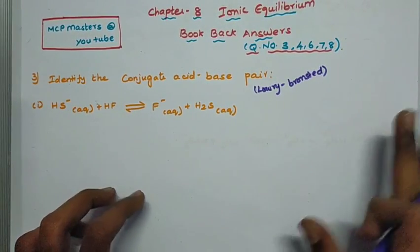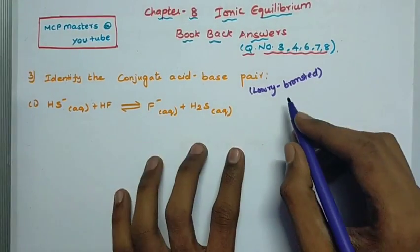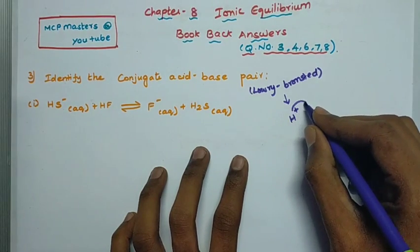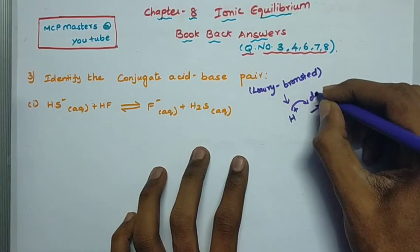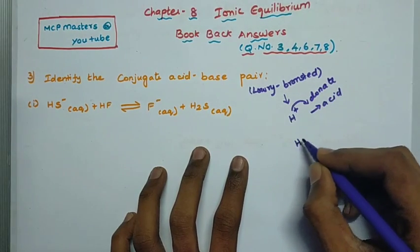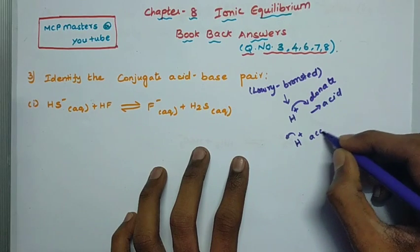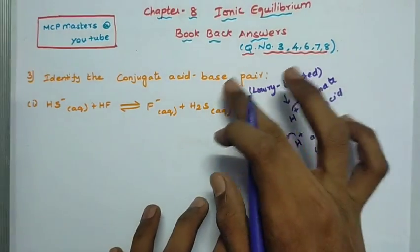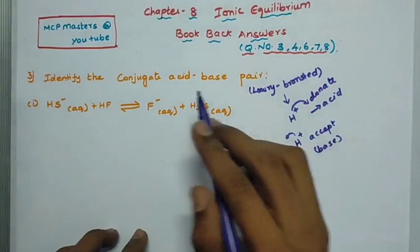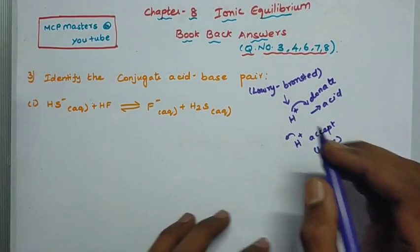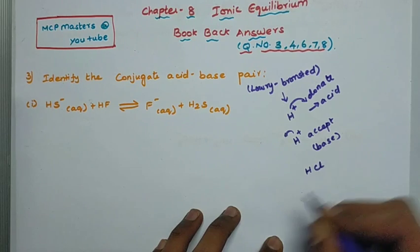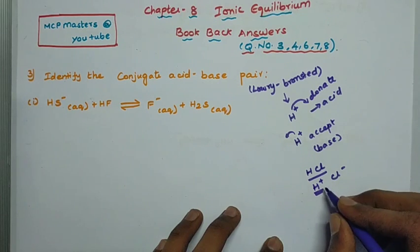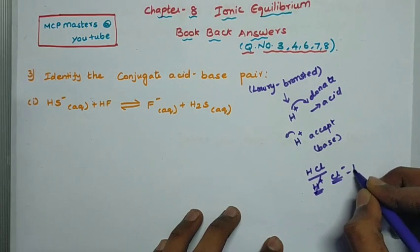So in Lowry-Bronsted theory, the concept is: each species that donates H⁺ ion is the acid, and each species that accepts H⁺ ion is the base. So the acid donates H⁺ and the base accepts H⁺. For example, HCl: H⁺ is donated, so Cl⁻ is the conjugate base.